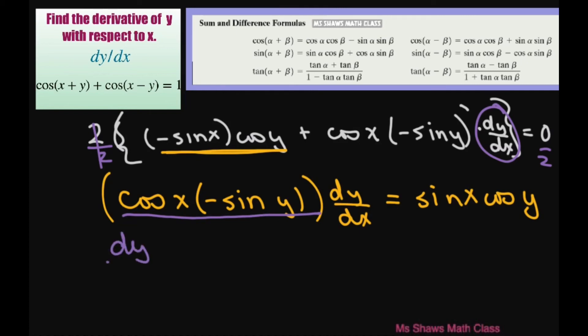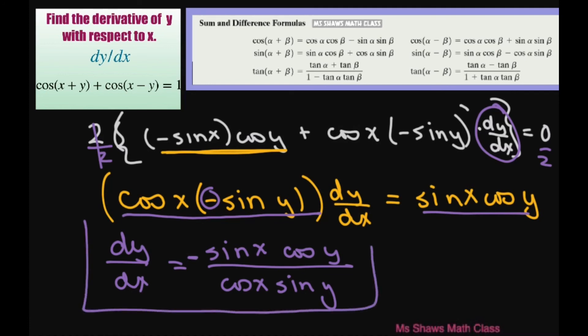So we get dy dx equals, and we have this sine of x cosine of y divided by, and we can put cosine of x sine of y, and I'll just pull this negative out. Pull it out front there. And that is your final answer.